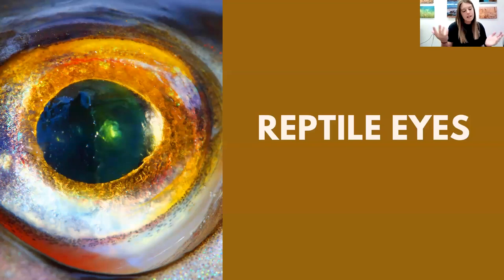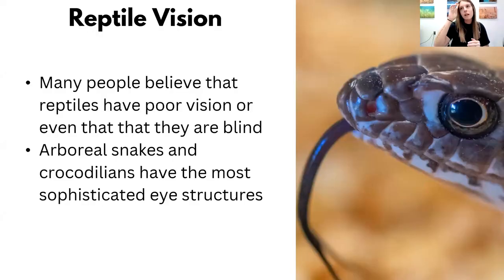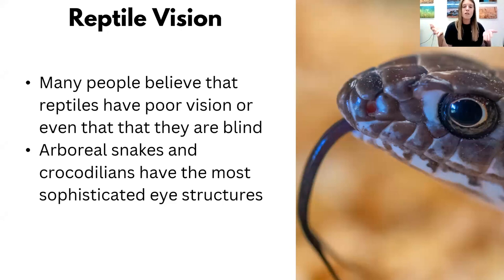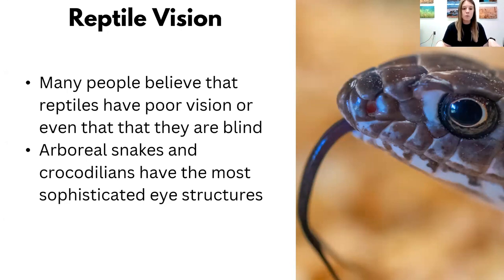Now reptile eyes. A lot of people believe that reptiles have really bad vision or are completely blind. It's really variant depending on the species, but very few species are actually blind. Most burrowing snakes are blind or have very rudimentary eyes because eyes get in the way when you're burrowing in the dark — so eyes don't really make sense for them. When we talk about the grand scheme of reptiles, arboreal snakes — snakes that live in trees — and crocodilians have the most sophisticated eye features. Animals that live on land need good visual acuteness.